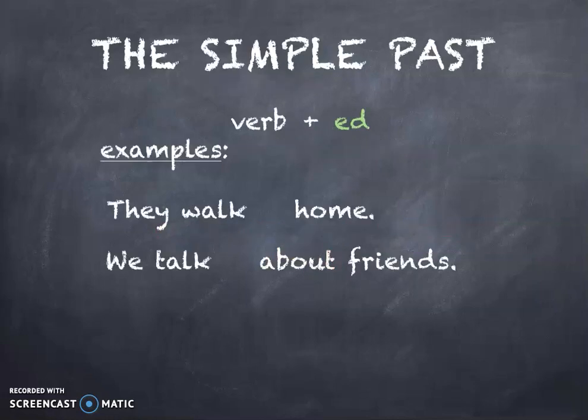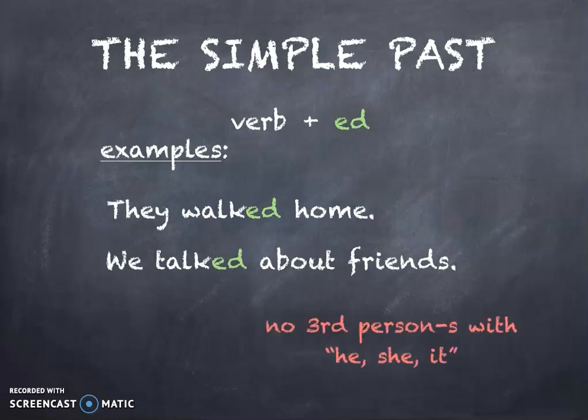So once again, the simple past: the only thing you have to do is look at the verb and put an 'ed' after it. The examples again: 'they walked home', 'we talked about friends', and there is no third person 's' with he/she/it.